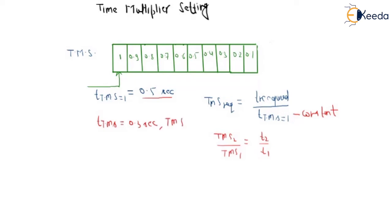So TMS required, TMS2 required upon TMS1 is equal to 1, when T2 required will be 0.3 and T1 is equal to 0.5. So this is nothing but 0.6. So TMS2 will be equal to 0.6.